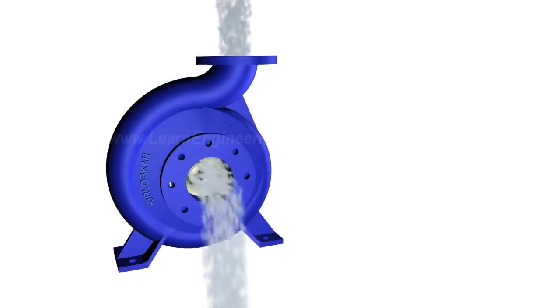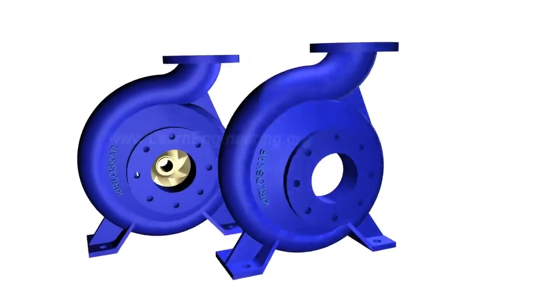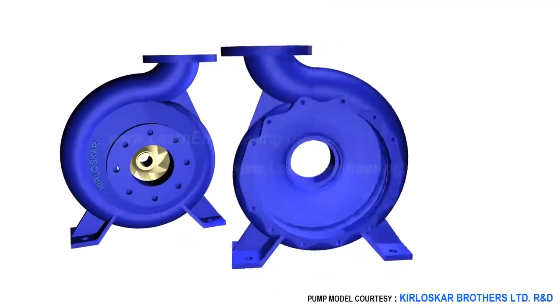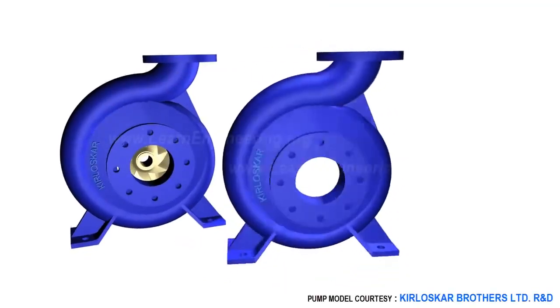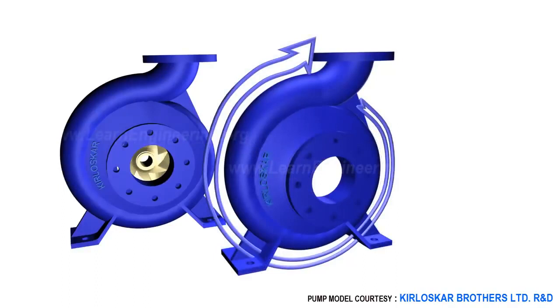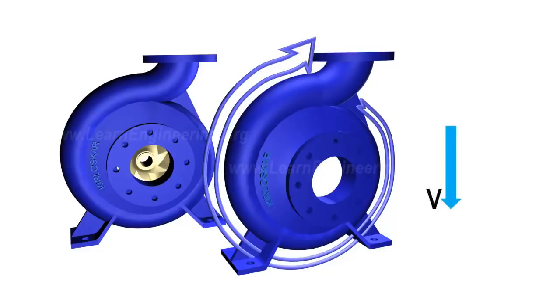Here you can note one specialty of casing - it has got increasing area along the flow direction. Such increasing area will help in accommodating newly added water stream and will also help in reducing exit flow velocity. Reduction in flow velocity will result in increase in static pressure which is required to overcome resistance of pumping system.